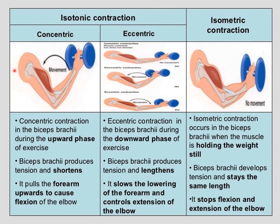In isotonic contraction there are two types — concentric and eccentric. In concentric contraction, the biceps brachii during the upward phase of exercise produces tension and shortens, pulling the forearm upwards to cause flexion of the elbow — so movement occurs when you pull the forearm upwards with a load. In eccentric contraction, the biceps brachii during the downward phase of exercise produces tension and lengthens, slowing the lowering of the forearm and controlling the extension of the elbow — so movement occurs and the joint angle widens.